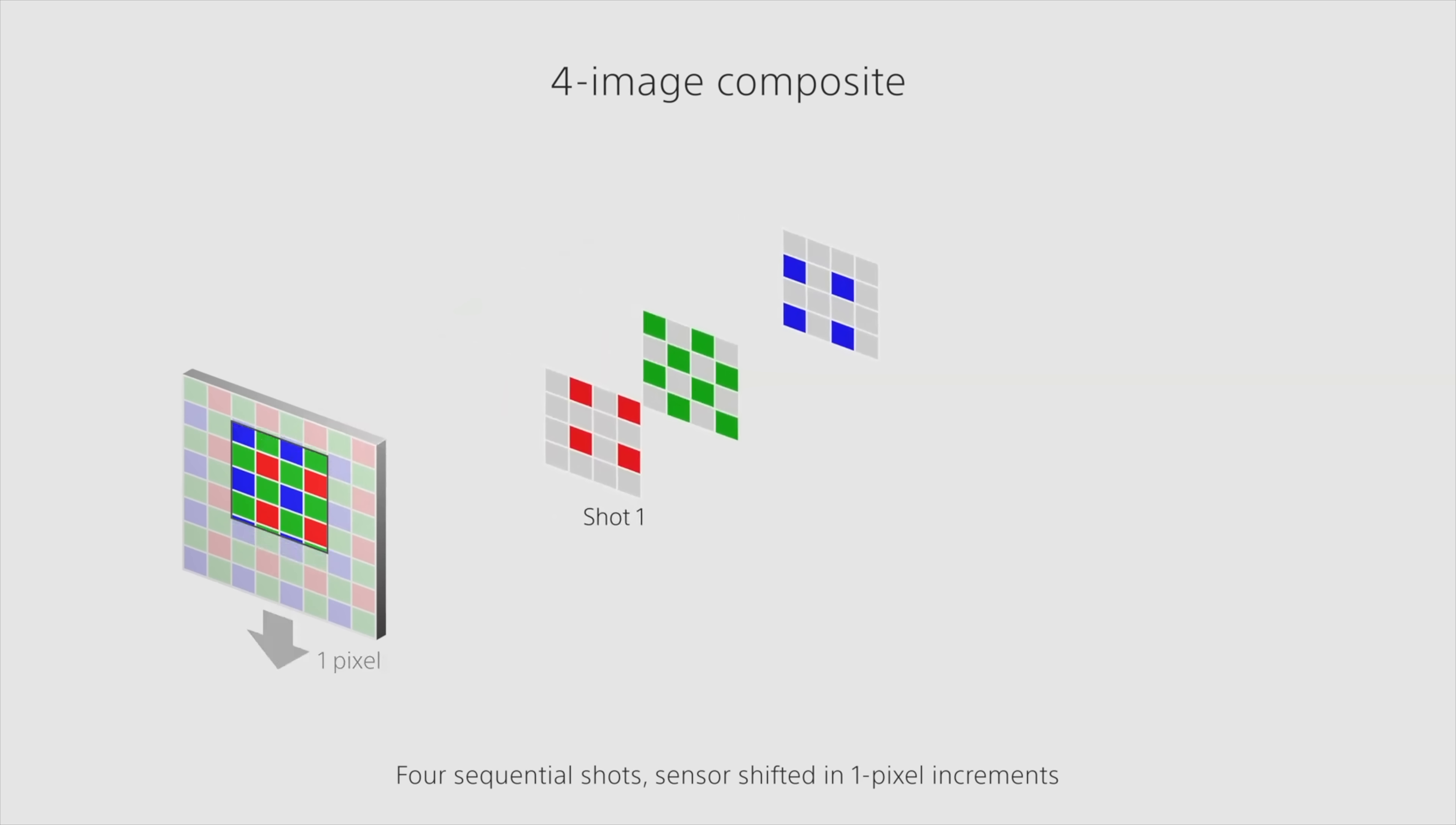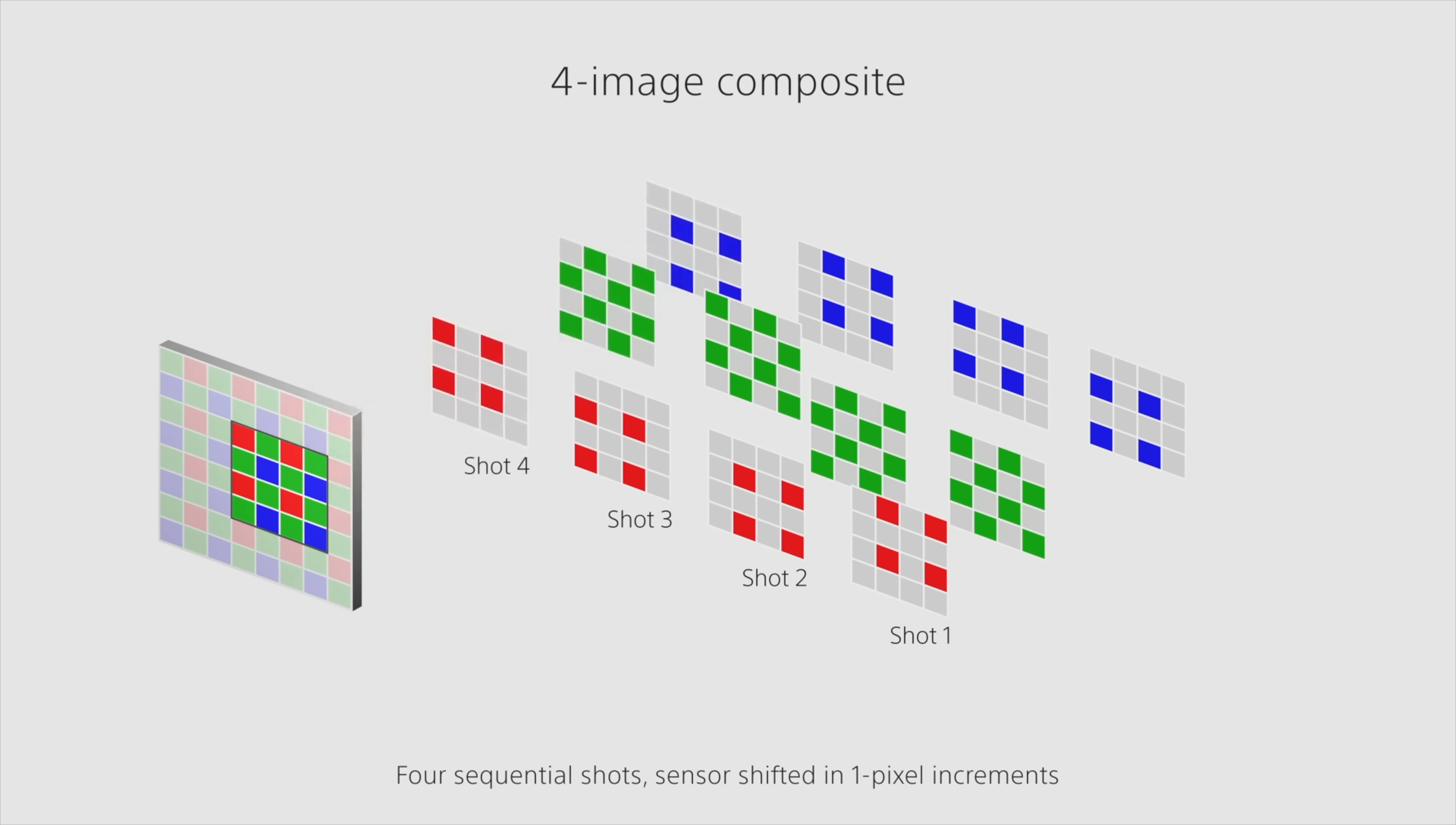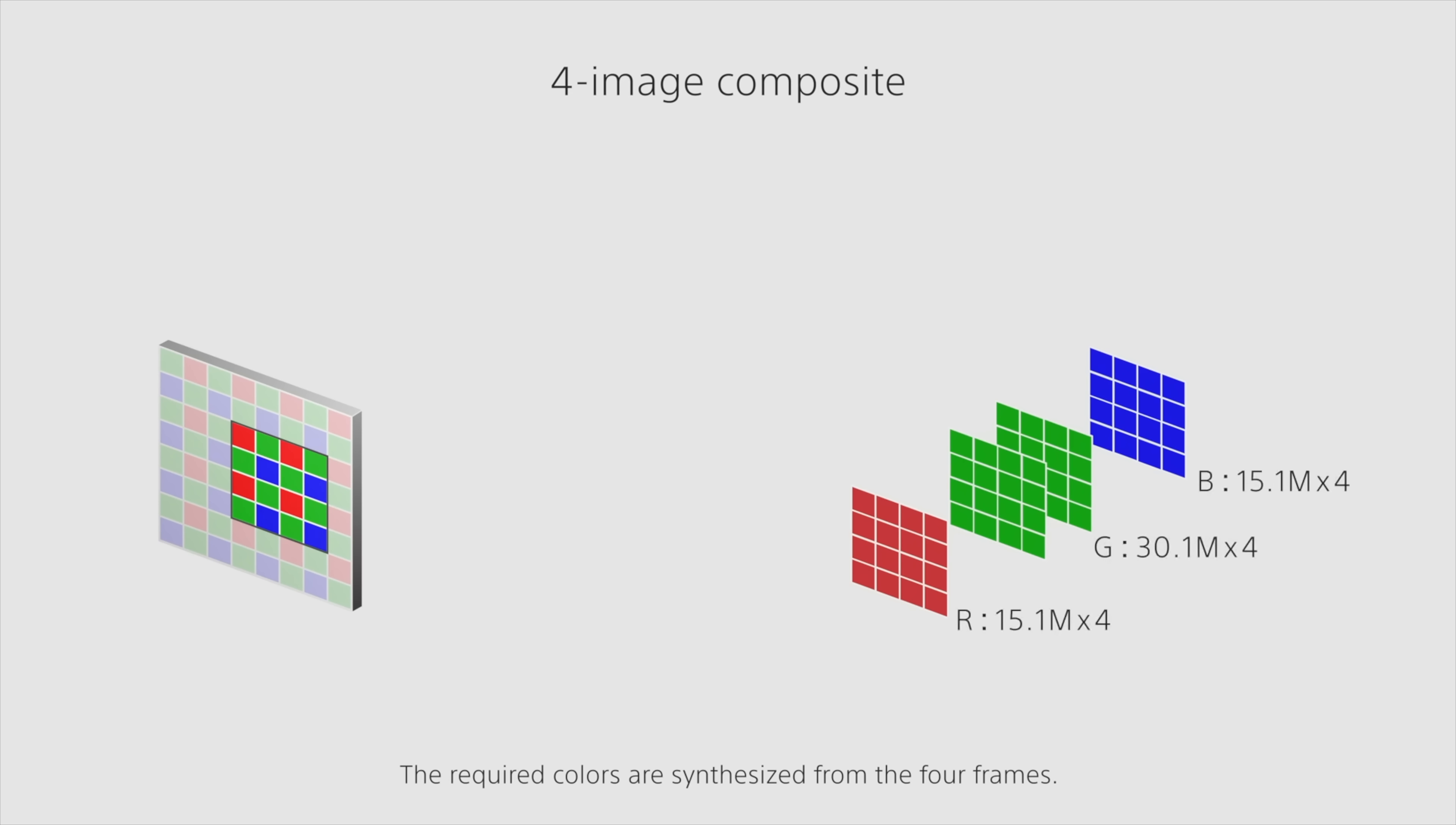The Bayer filter significantly decreases the image quality you can get. It's just nobody's figured out anything better. But pixel shift completely works around this by shifting the pixels one full pixel. So every single pixel has red, blue, and green information.